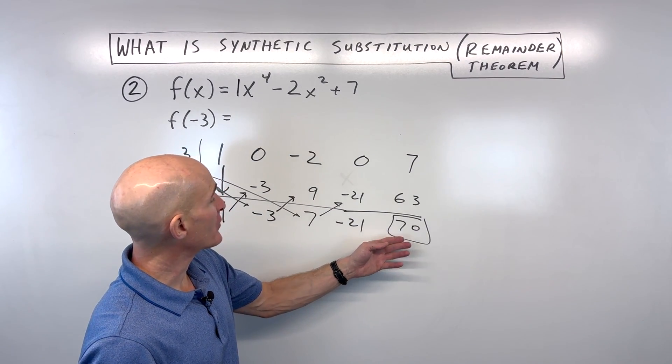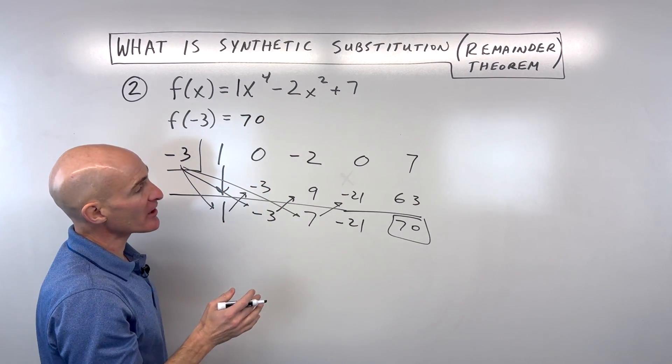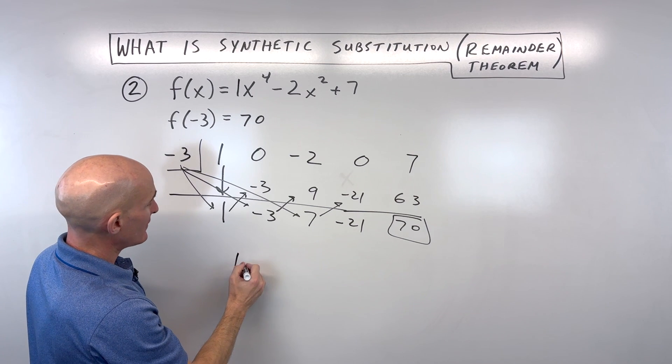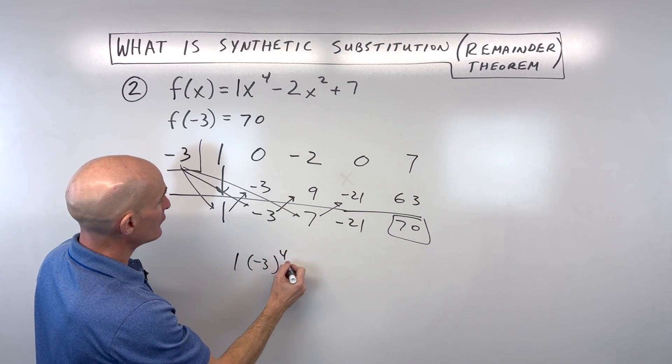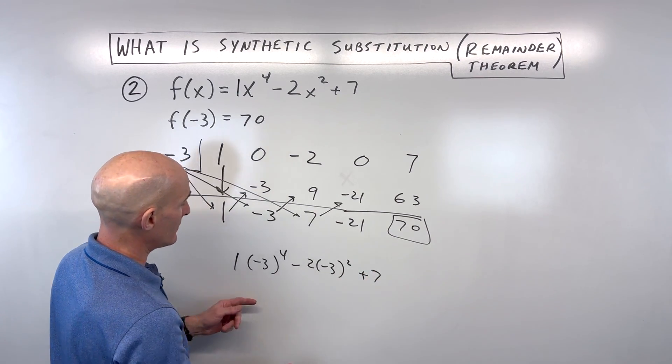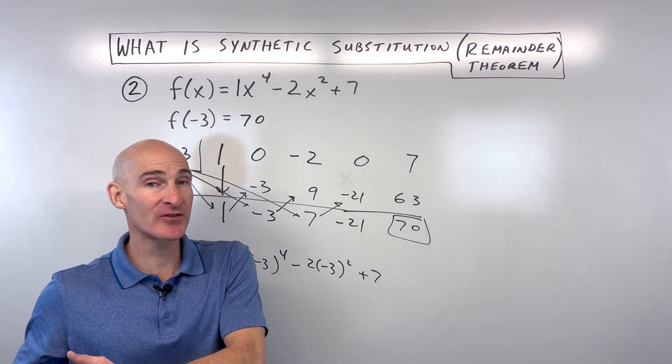So they call it the remainder theorem. But this is actually our answer. F of negative 3 is equal to 70. Now, let's check our work by putting negative 3 in directly. So we've got 1 times negative 3 to the 4th minus 2 times negative 3 squared plus 7.